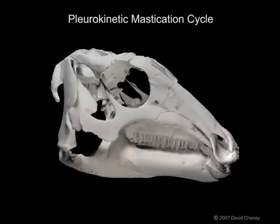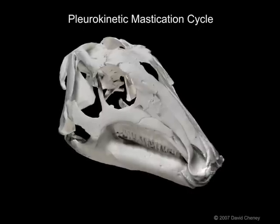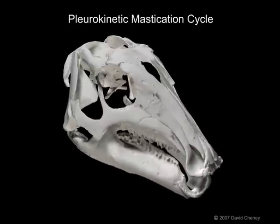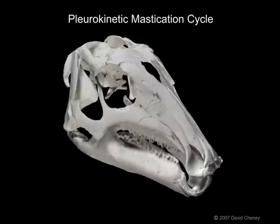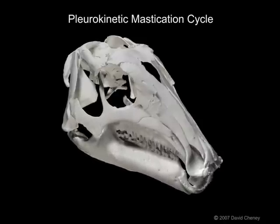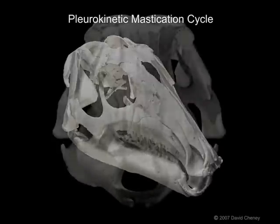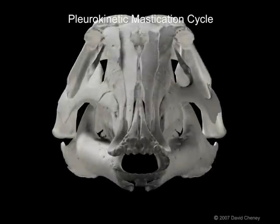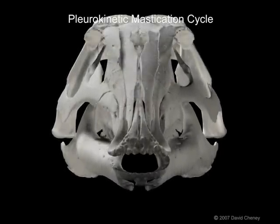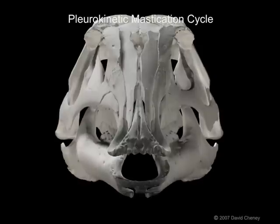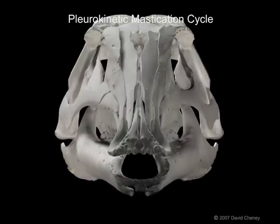Familiarity with important osteologic and myologic features of the model facilitates understanding this unique mastication cycle. As the depressor muscles contract, the jaw is opened. In contrast, contraction of the adductor muscles returns the jaw to its closed position, bringing the maxillary and dentary teeth into occlusion. As the jaw continues to be adducted vertically, the maxilla jugal units are forced to rotate laterally, resulting in the grinding of the lower and upper teeth across the entirety of their occlusal surfaces.